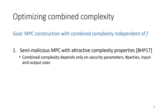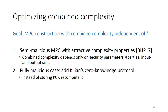To achieve this, we start with an MPC protocol by Brakerski et al. This protocol is secure against semi-malicious adversaries and its combined communication and state complexity depend only on security parameters, number of parties, and input and output sizes. Note that this satisfies our requirement of combined complexity being independent of the function f. To achieve a similar result in the fully malicious setting, we extend the semi-malicious construction by Kilian's PCP-based zero-knowledge protocol, which is executed after each round of the semi-malicious construction to ensure the correct behavior of the parties.